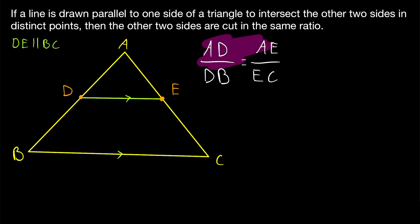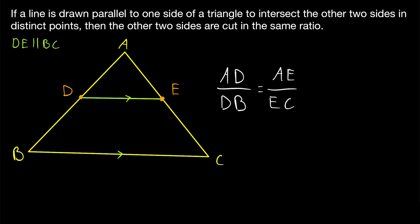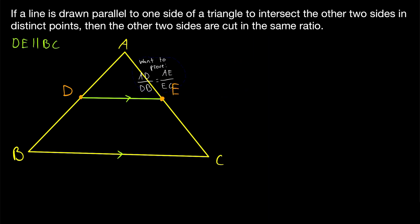One way to arrive at an equality between ratios of sides of triangles is to look at the ratios of the areas of related triangles. That's the approach we're going to take in this proof. Remember, this equality is what we want to show.